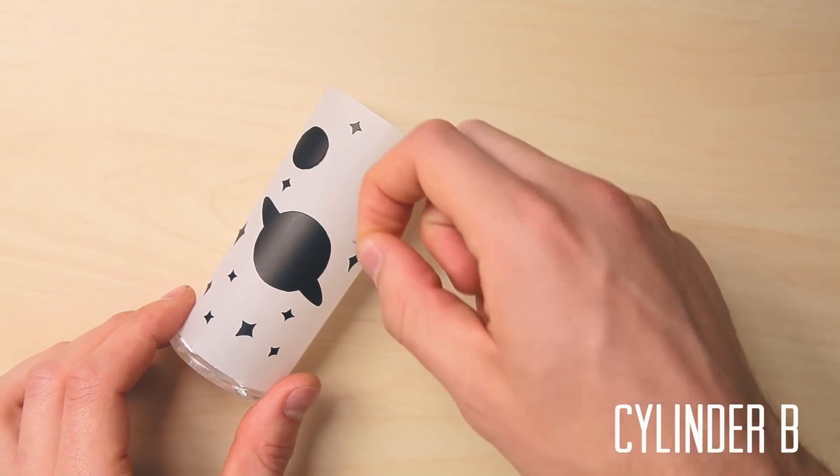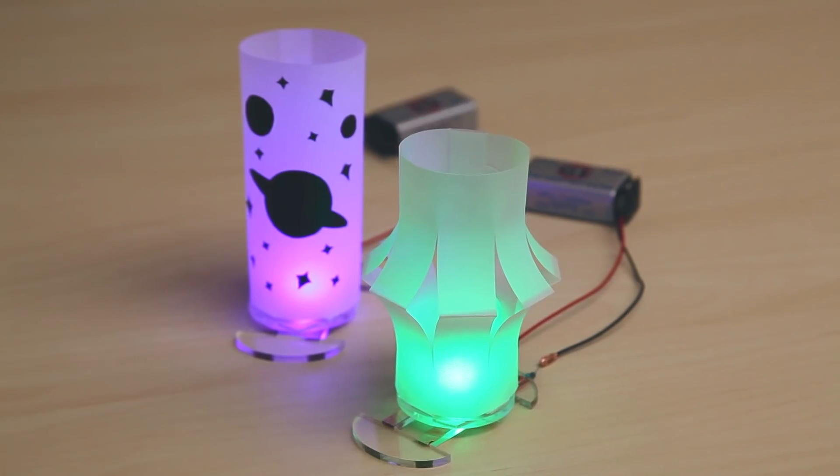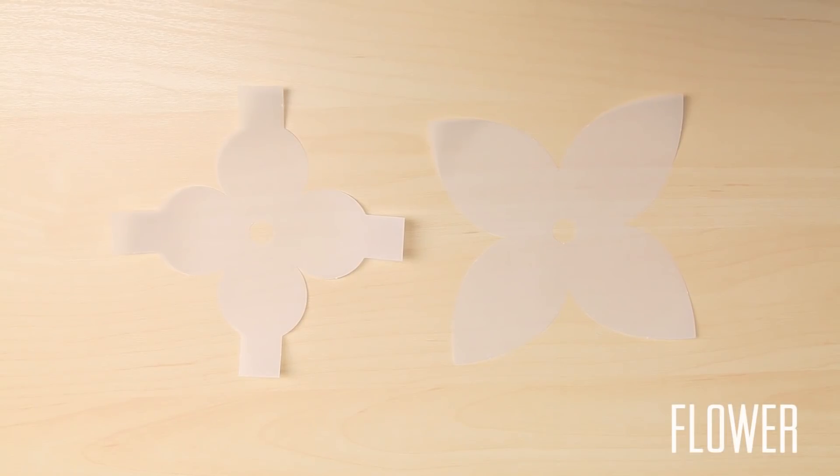Add silhouettes by cutting shapes out of your black sticker sheet. Your flower lantern actually uses two pieces. Let's start with the small one.